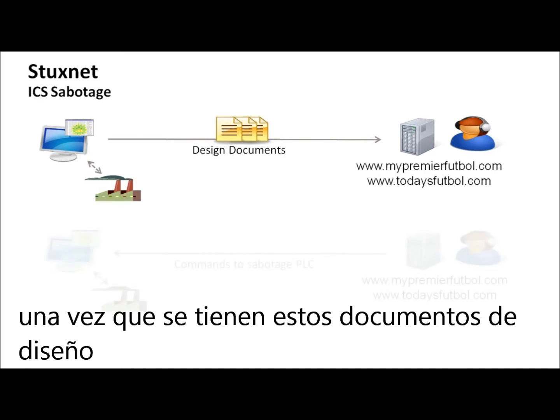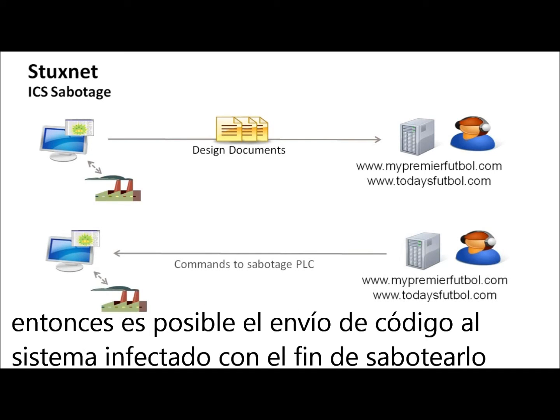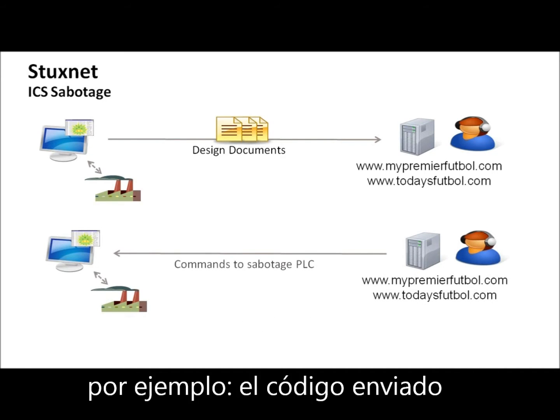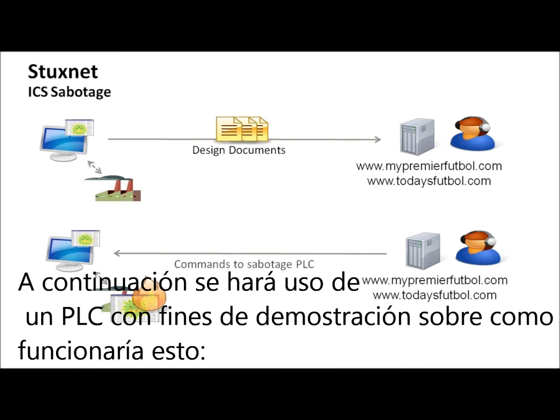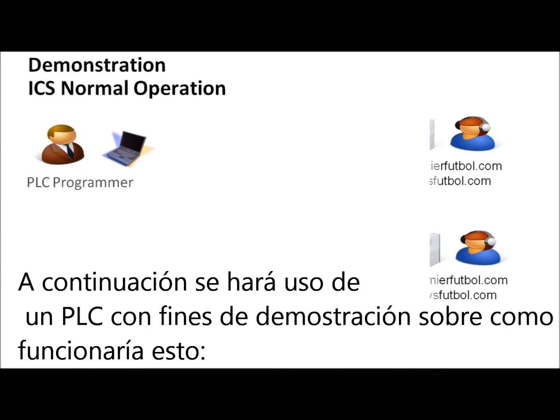The attacker then steals design documents to determine how to sabotage the industrial control system. Once they have those design documents, they are able to send code to the infected system, sabotaging it. For example, the code sent can result in a pipeline exploding or a centrifuge spinning out of control.